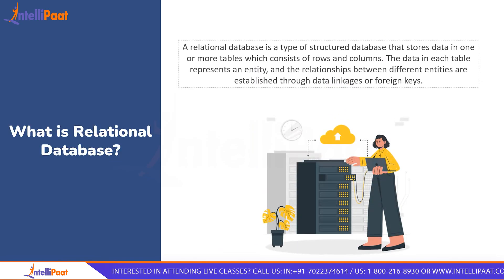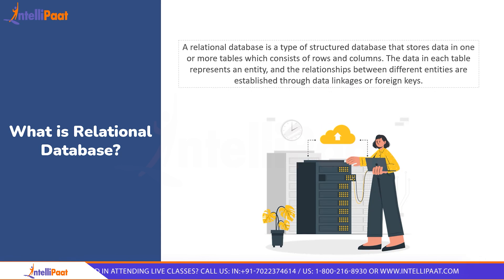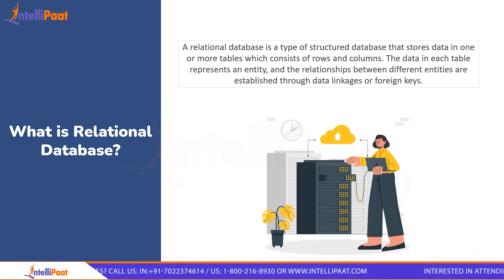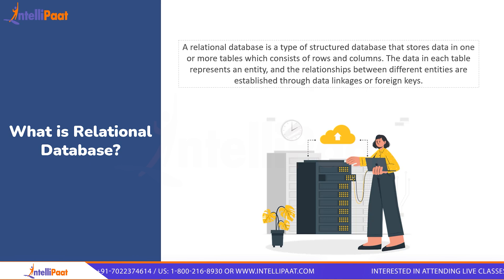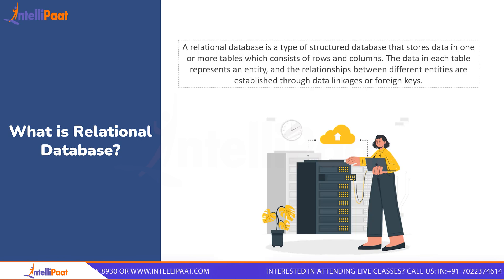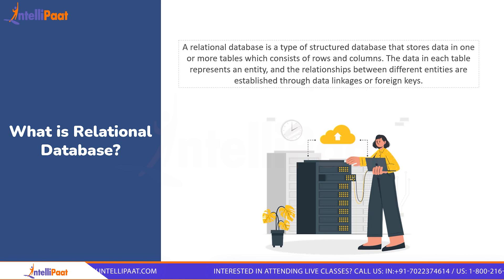A relational database is a collection of data organized into tables, or relations of rows and columns, that have predetermined relationships with each other. The tables are connected by unique IDs or keys. When a user needs to access specific information, they can use a key to access all the table data that has been predetermined to be related to that key. This is how a relational database works.